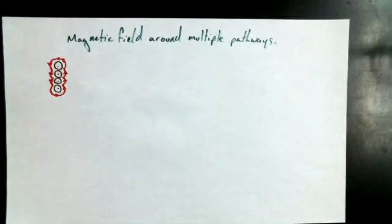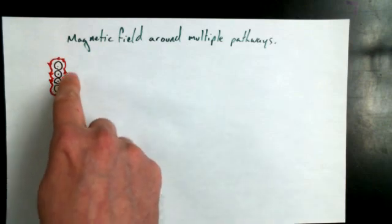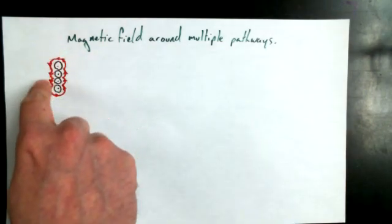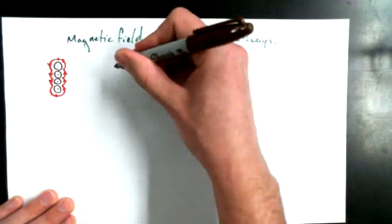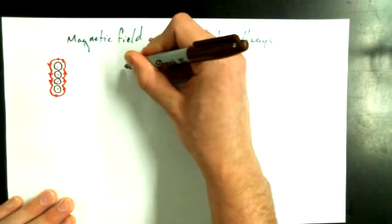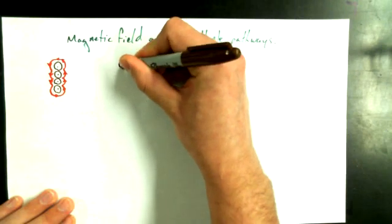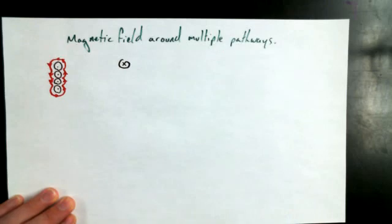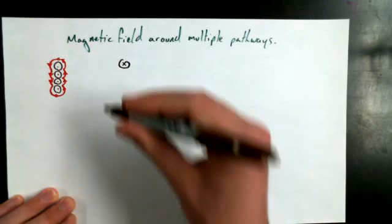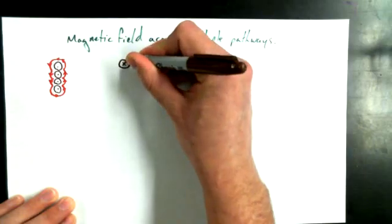That's for a row of conductors coming out of the page. The magnetic field is sort of zigzagging, roughly counterclockwise around those conductors. The numerical result from the previous problem was 4.5 times 10 to the negative 5 Tesla.